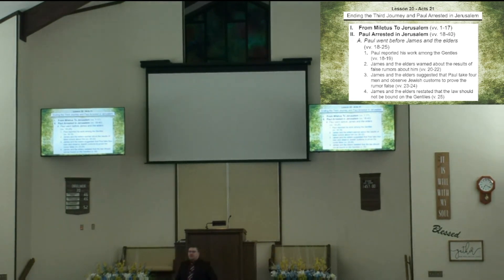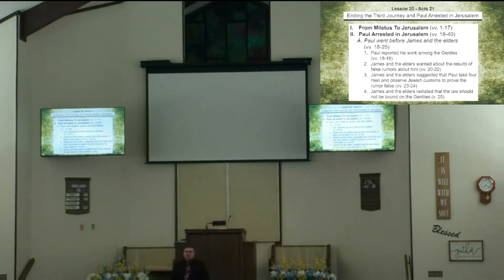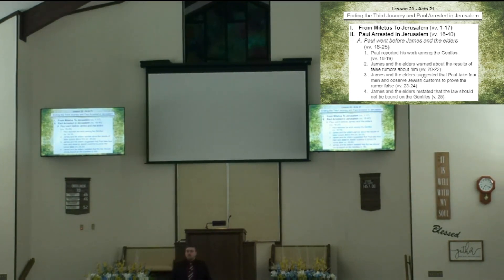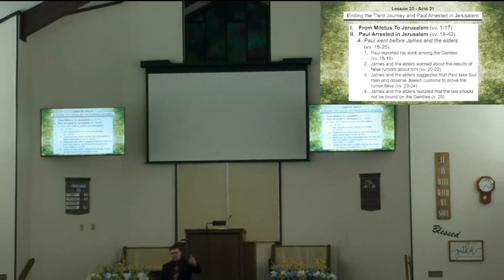Verse 25 is important. James and the elders point out that as for the Gentiles who have believed, they have sent a letter stating that Gentiles should abstain from what has been sacrificed to idols, from blood, from what has been strangled, and from sexual immorality. What verse 25 tells us is that this decision is not contrary to what was decided in Acts chapter 15. In fact, Acts 15 records that they sent a letter of that content. Perhaps verse 25 refers specifically to that same letter, or possibly another letter — but the content remains the same.